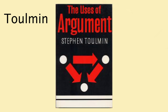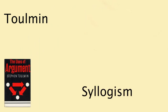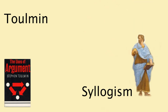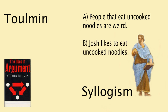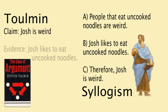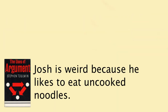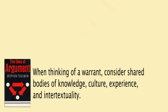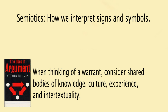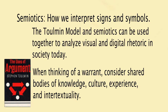In the 1950s, a British gentleman named Toulmin came up with another idea. But first, I need to explain the syllogism. In classic Aristotelian models, a syllogism looked like this: A — people that eat uncooked noodles are weird; B — Josh likes to eat uncooked noodles; C — therefore, Josh is weird. To convert this to a Toulmin model: C is the claim — Josh is weird; B is the evidence — Josh likes to eat uncooked noodles; A is the warrant — people that eat uncooked noodles are weird. This is the unspoken part of the argument that the author and the audience should both agree upon. So the Toulmin argument would look like this: Josh is weird because he likes to eat uncooked noodles. According to Toulmin, if your audience does not buy your warrant, they are not going to be persuaded. The concept of a warrant brings in many ideas, including shared bodies of knowledge, culture, experience, and intertextuality. I would like to introduce the keyword semiotics — or how we interpret signs and symbols. The Toulmin model and semiotics can be used to analyze visual and digital rhetoric in society today.